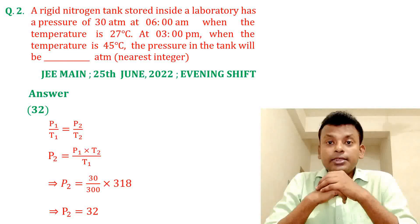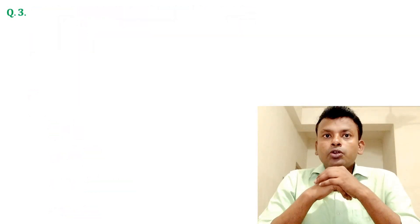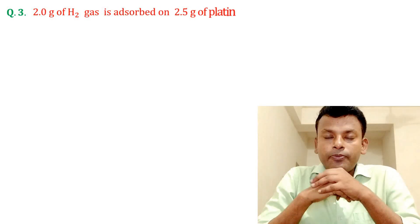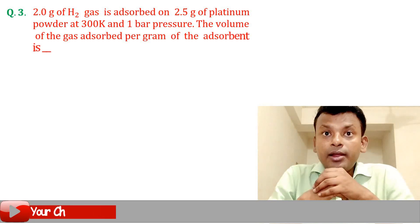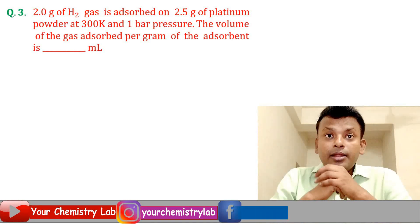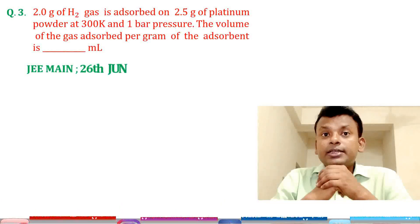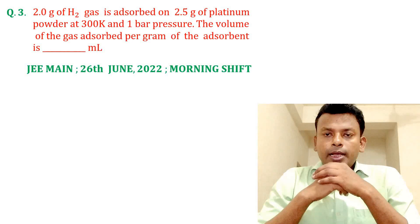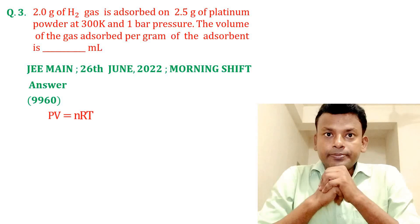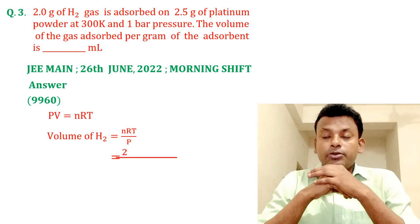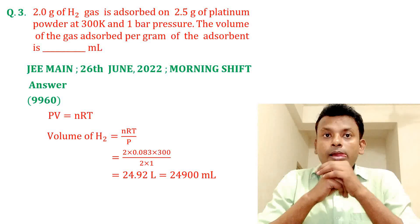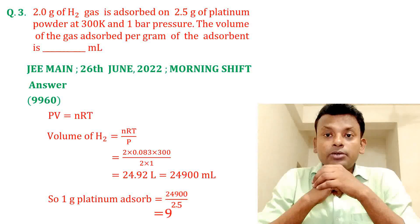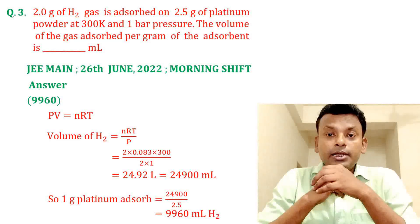Question 3. 2 grams of hydrogen gas is absorbed on 2.5 grams of platinum powder at 300 Kelvin and 1 bar pressure. The volume of the gas absorbed per gram of the absorbent is dash mL. This question was set in JEMN 26th June 2022 morning shift. Answer is 9960. We know that PV = nRT. Volume of hydrogen = nRT/P. Putting in all values, the answer is 24.92 liters, so 1 gram of platinum absorbs 9960 mL of H₂.